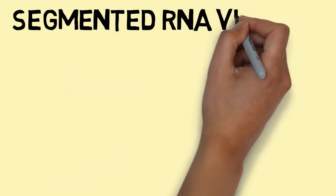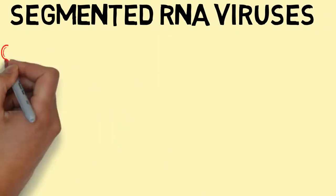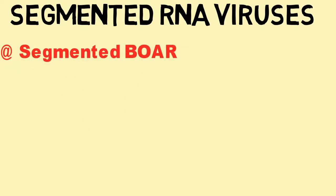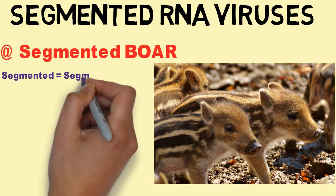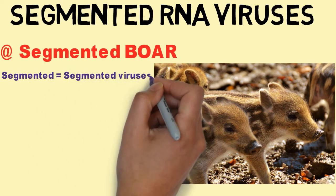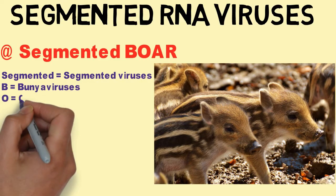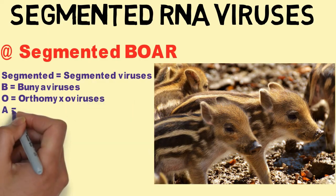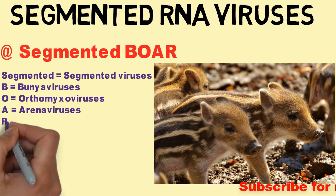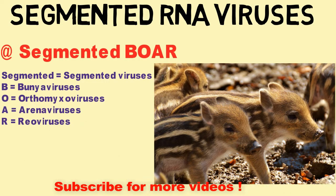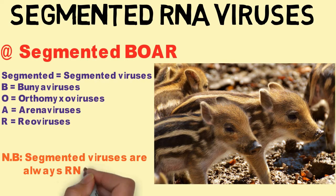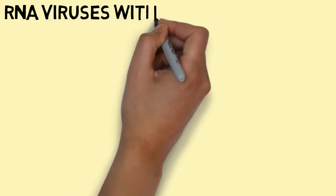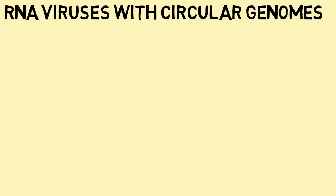Let's move to the segmented RNA viruses. The mnemonic is 'Segmented BOAR,' where B is for Bunyaviruses, O is for Orthomyxoviruses, A is for Arenaviruses, and R is for Reoviruses. Also note that all segmented viruses are RNA viruses.